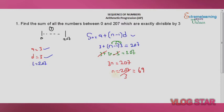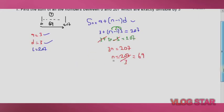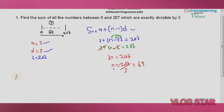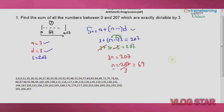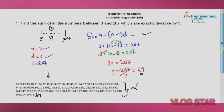This tells us that there are 69 numbers between zero and 207 that are divisible by three. If you were to list them by adding three repeatedly — 3, 6, 9, and so on — and count them all, you would get 69. But using the formula gives us that answer directly without counting each one.